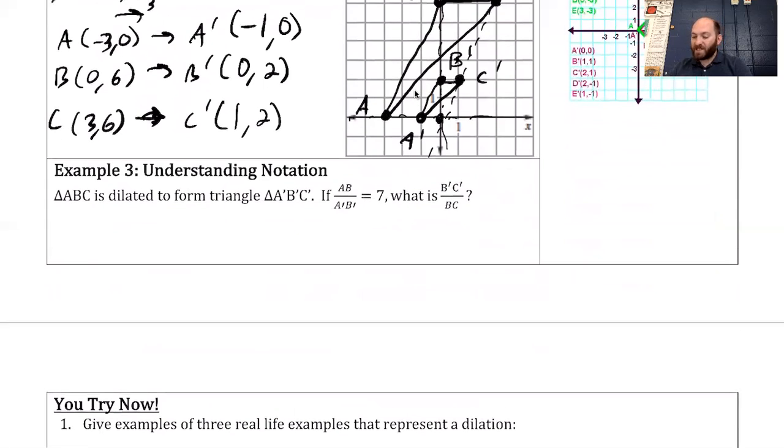Example three. Triangle ABC is dilated to form triangle A prime, B prime, C prime. If AB over A prime B prime equals seven, what is B prime C prime over BC? It seems tricky because I don't have an image. But here's what I know. In the first case, I have pre-image over image. In the second case, I have image over pre-image because the prime is on top. If pre-image over image is seven over one, I'm just flipping to reciprocal. Image over pre-image is one over seven.